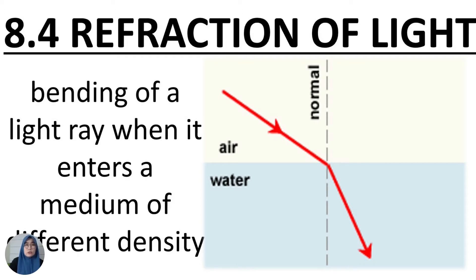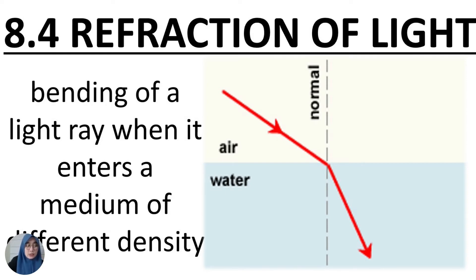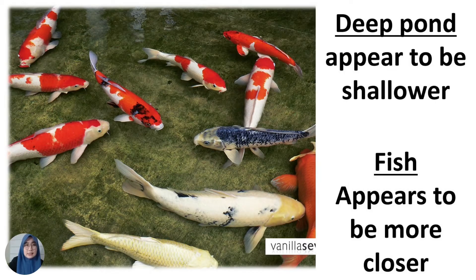Refraction of light is the change in direction and the bending of light when it passes through two media of different densities. You can see here the bending of the light ray from air to water, which are two media with different densities.